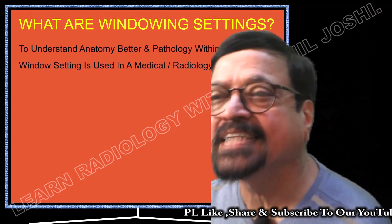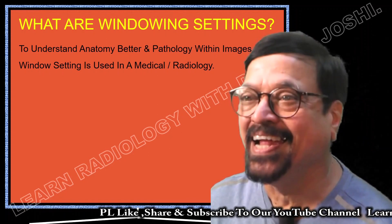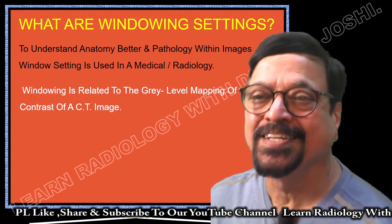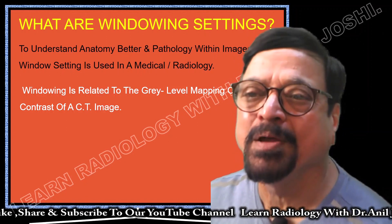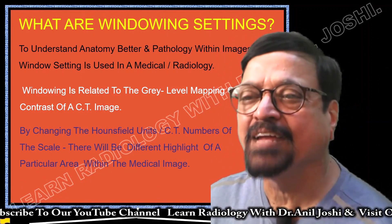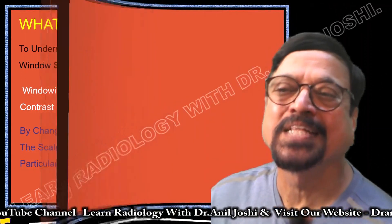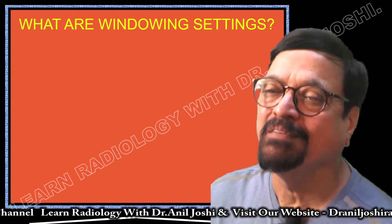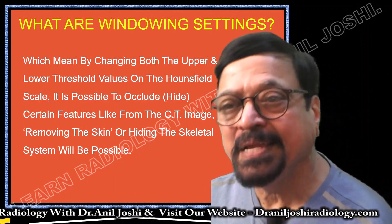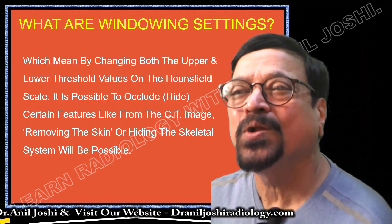To understand anatomy better, we use window settings. Pathology can be depicted better provided we set the proper window width and level. By using them you can get the best possible results. Windowing is related to the gray level mapping of the contrast of CT images. By changing the Hounsfield Unit numbers on the scale, different areas within the medical image can be highlighted. This is required especially when dealing with a stroke patient — we change the window width and level to detect early ischemic changes. In summary: what is windowing and why do we do it?